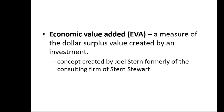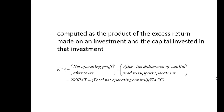The final measure is economic value added, EVA. It's a measure of the dollar surplus value created by an investment, and the concept was created by Joel Stern, formerly of the consulting firm Stern-Stewart. EVA is computed as the product of the excess return made on an investment and the capital invested. So EVA equals NOPAT minus total net operating capital times the weighted average cost of capital — which represents the after-tax dollar cost of capital used to support operations.